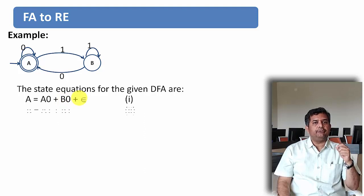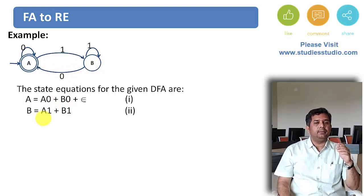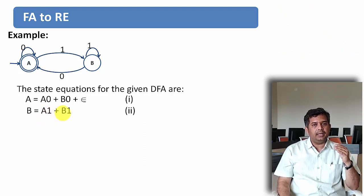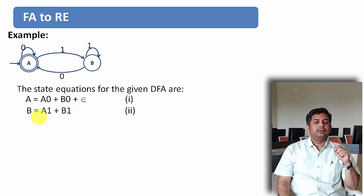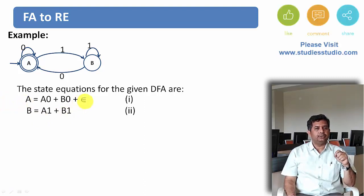Let us find the other state's equation. How can I reach state B? I can reach state B from state A with a 1 transition and from state B with a 1 transition. Let us number them as equation 1 and equation 2.